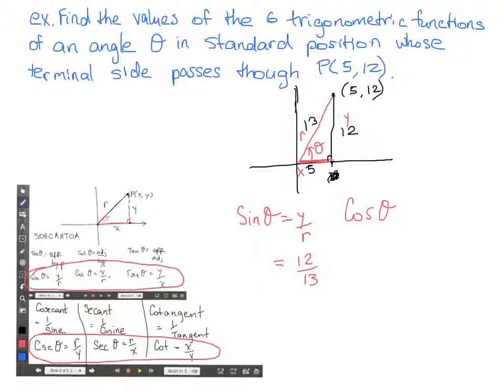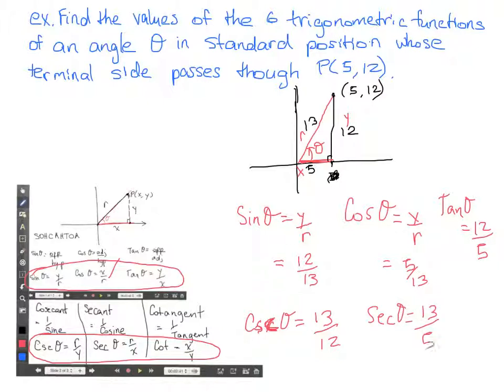Tan of the angle equals y over x. So that's 12 over 5. And we can just keep going here, cosecant of the angle, that's 1 over sine. So we just flip what we've already done over, so 13 over 12. Secant of the angle is equal to, flip it over, you get 13 over 5. And cotangent of the angle is equal to 5 over 12.